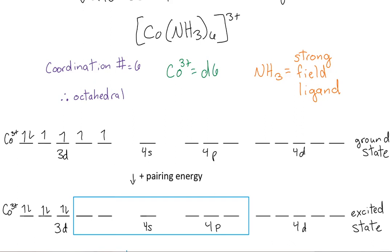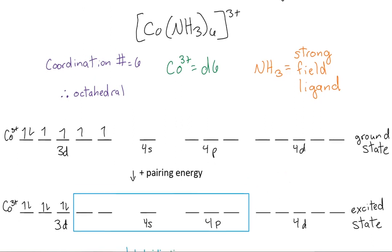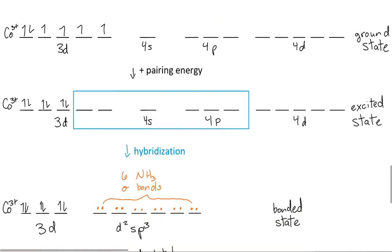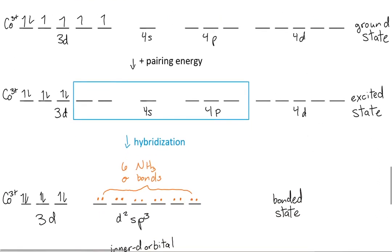Now we're ready to hybridize. We'll take six orbitals starting from the left to create a d2 sp3 orbital. Here we can add the six ammonia sigma bonds. That will give us our bonded state of CO NH3 6 3 plus.